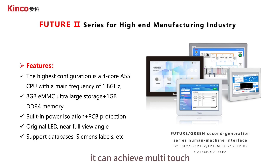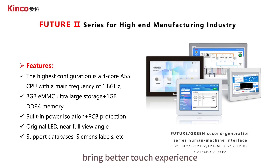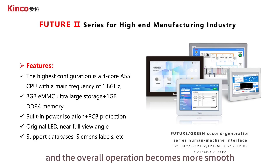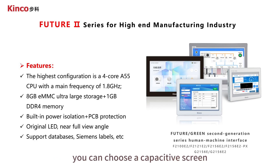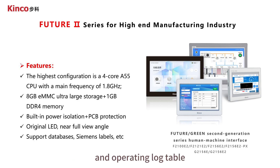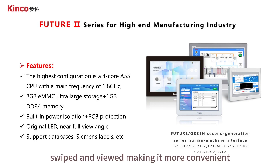In addition to the conventional resistance screen, we also launched the F2156 E2 PX capacitive screen. The capacitive screen is the same as the mobile phones we use now — it can achieve multi-touch, provide more gesture control functions, bring a better touch experience, and make overall operation smoother. When the on-site environment allows direct finger touch, you can choose our capacitive screen. For example, our alarm information table and operation log table can be directly swiped and viewed, making it more convenient.